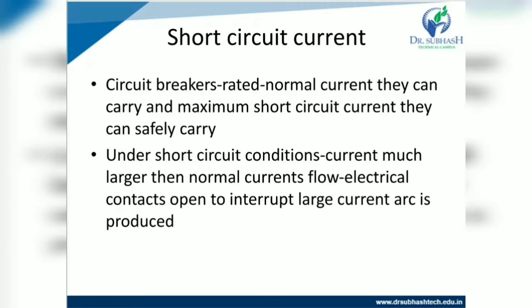For short circuit current, a circuit breaker is rated for the normal current it can carry and the maximum short circuit current it can safely interrupt. Under short circuit conditions, current much larger than normal — almost more than 10 times — flows, and the electrical contacts open to interrupt this large current, producing an arc. When a fault occurs, the trip circuit is energized, and moving contacts separate from fixed contacts. An arc is produced between the fixed and moving contacts, which interrupts the large current.